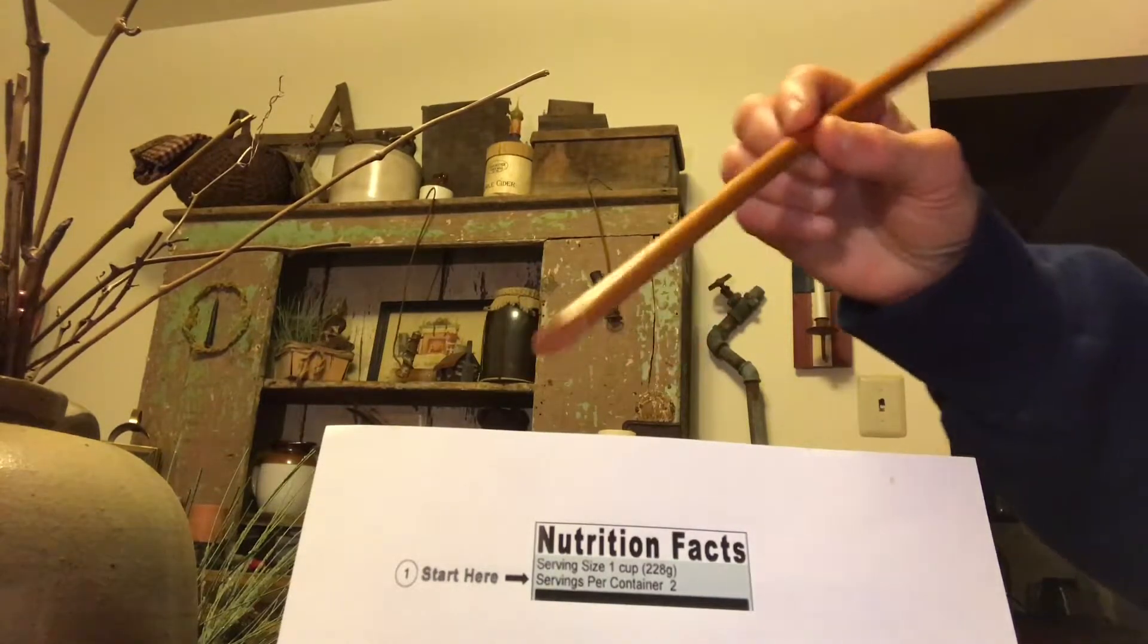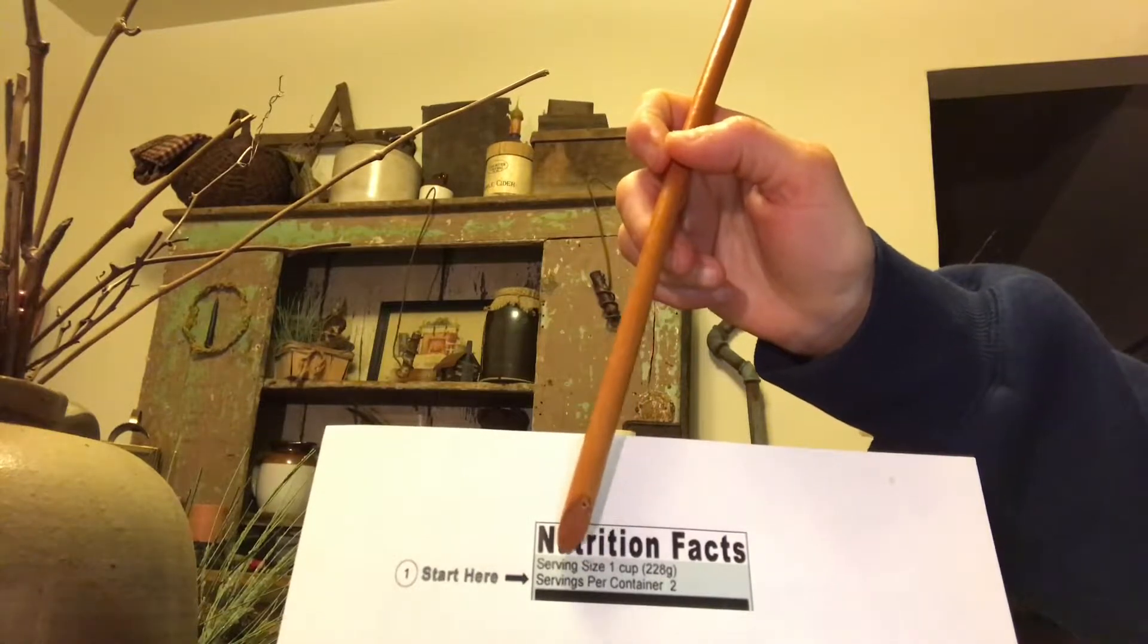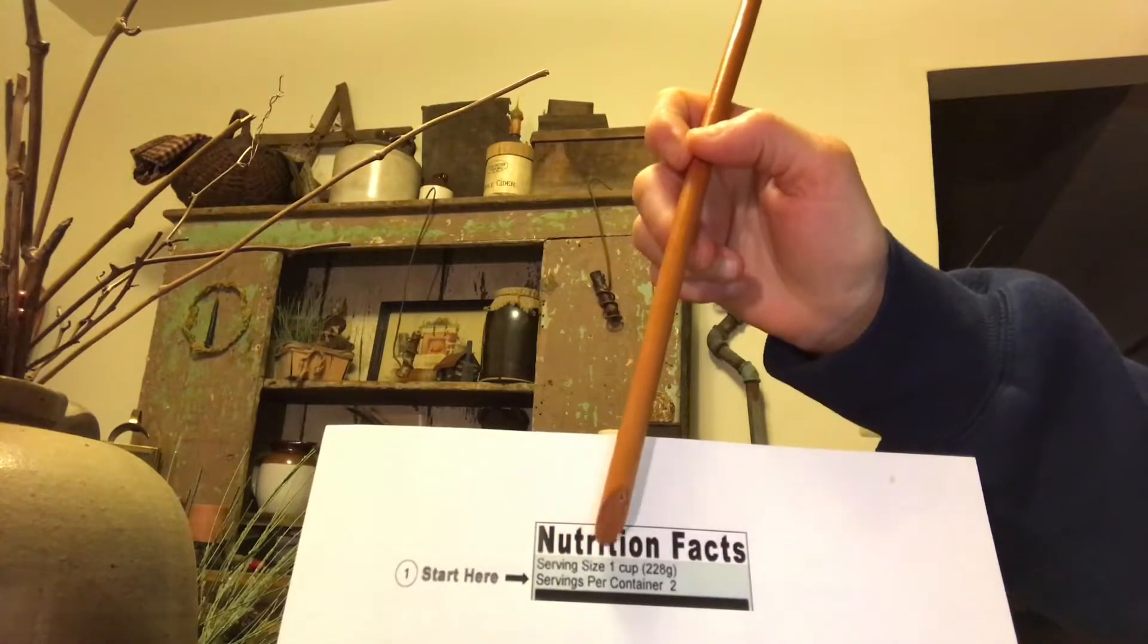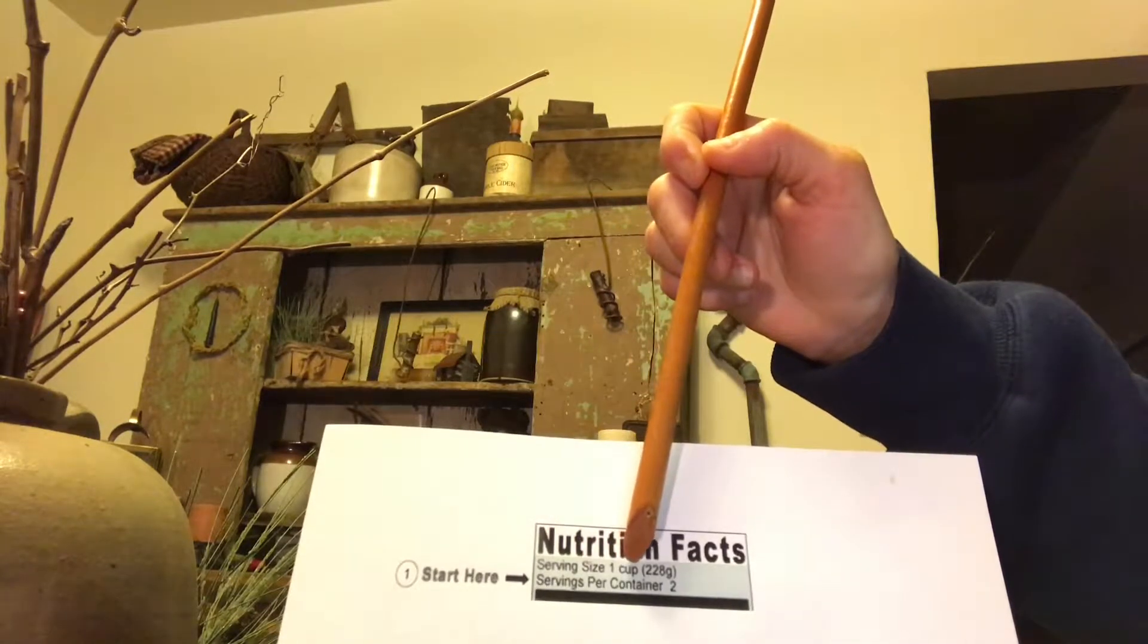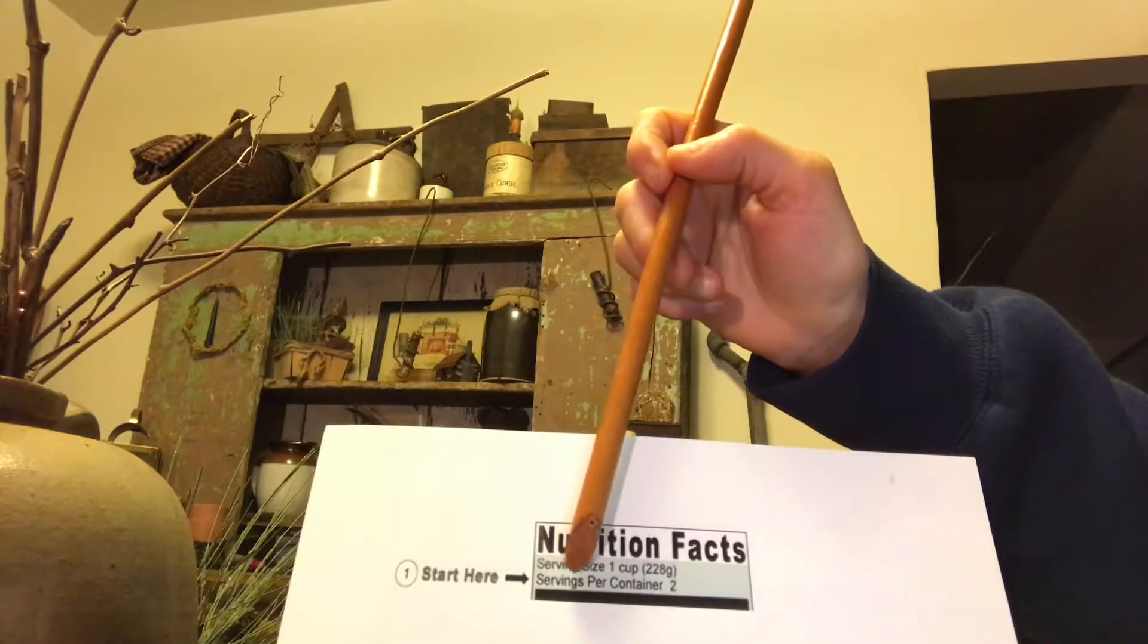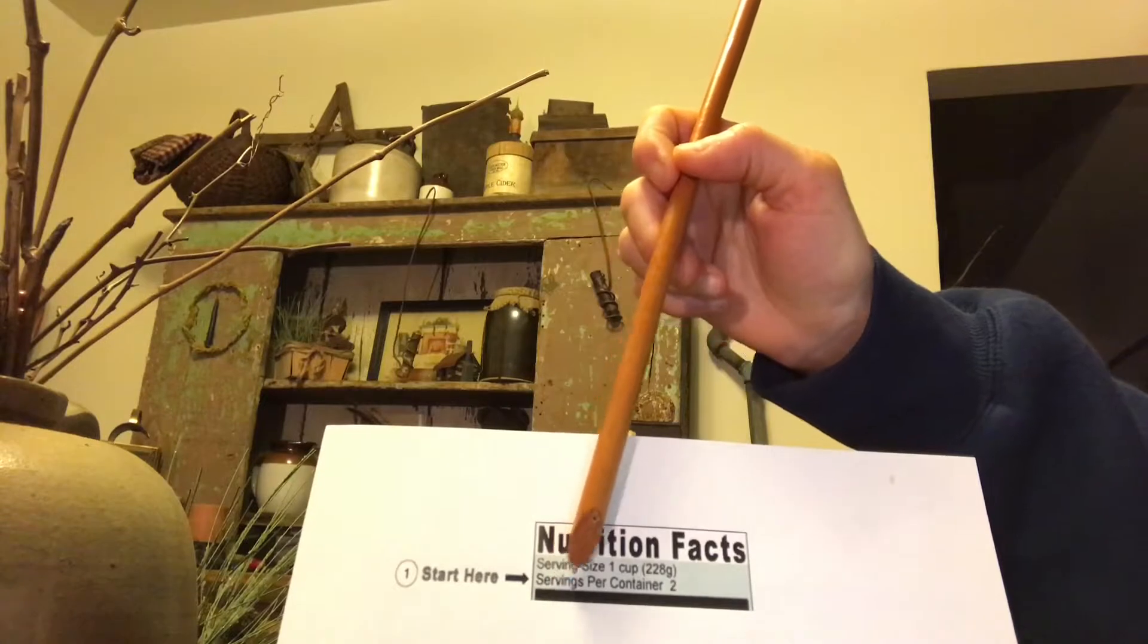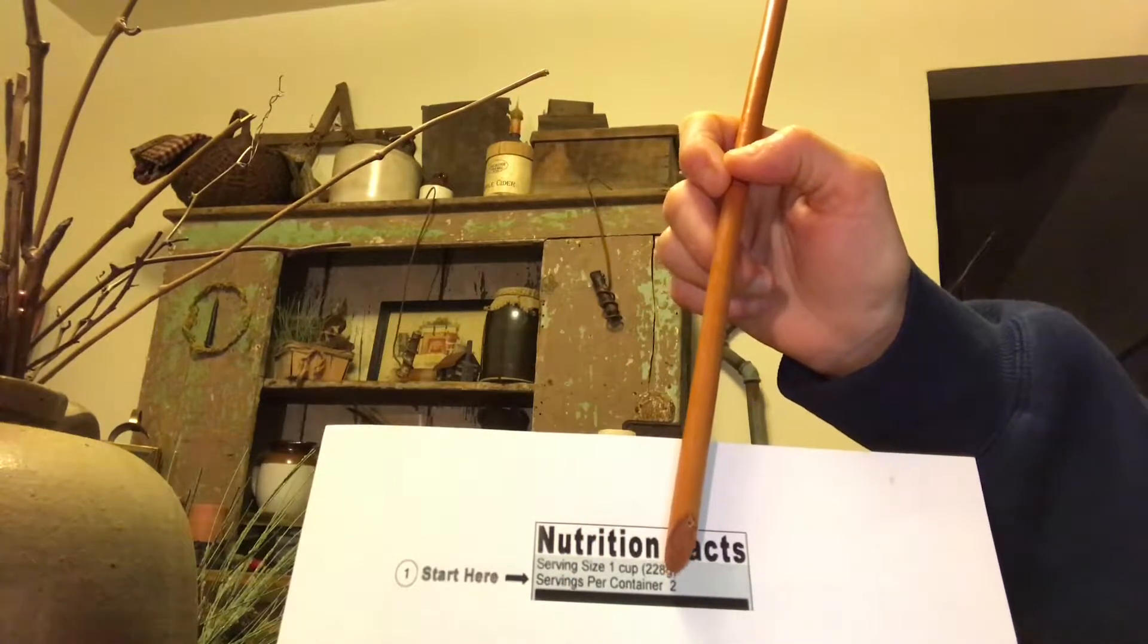You start at the top and the top is the serving size. And for this package of Kraft Macaroni and Cheese, the serving size is one cup. But the whole container is actually two serving sizes, or in other words, two cups.